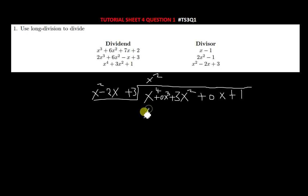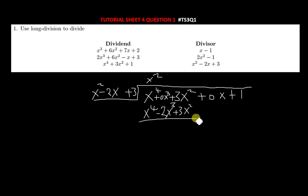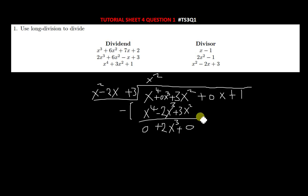Divide x² into x⁴ to get x². Multiply: x² times x² gives x⁴; x² times −2x gives −2x³; x² times 3 gives 3x². Subtract: x⁴ − x⁴ = 0; 0x³ − (−2x³) gives +2x³; and 3x² − 3x² = 0. Bring down the 0x term.